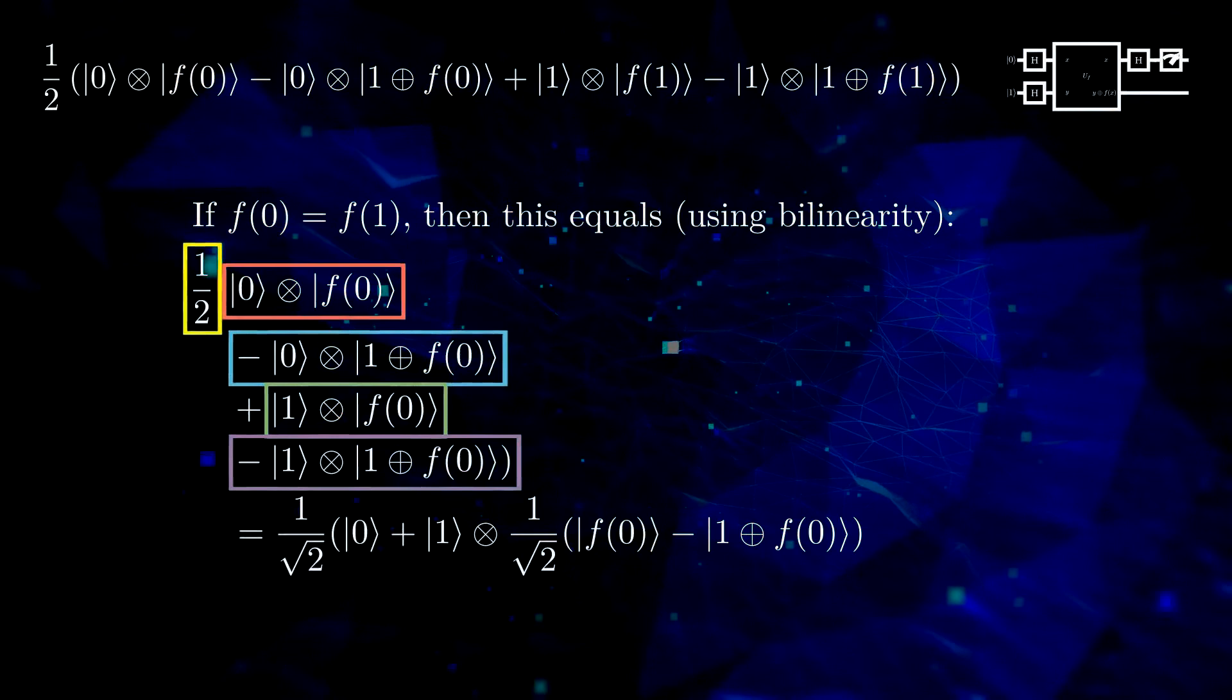If f is constant, then by the laws of the tensor product, we get the following.